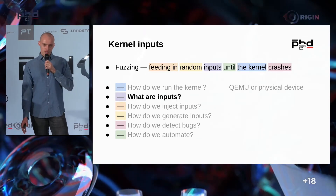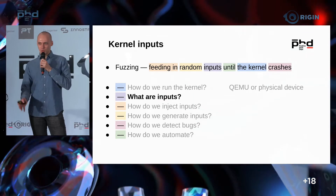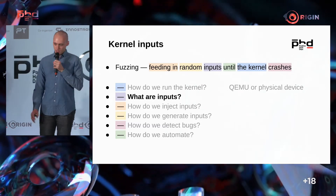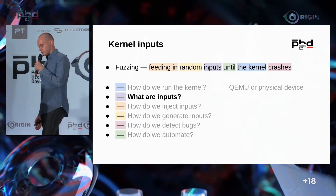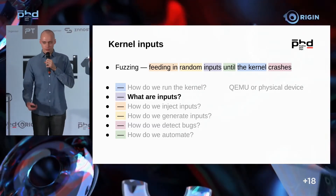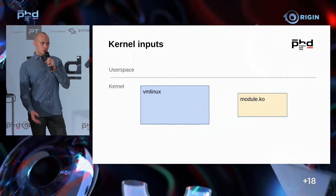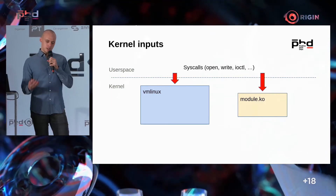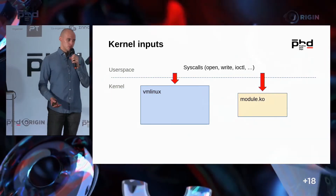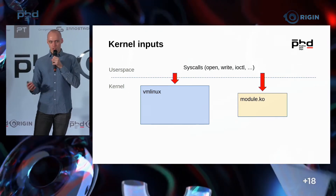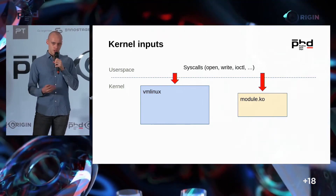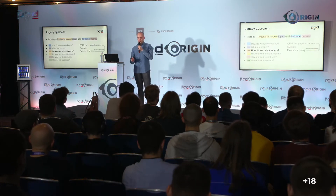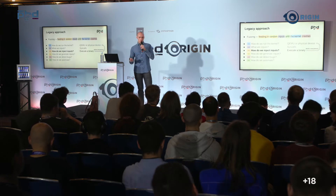So we have two opportunities: physical hardware and VMs. Let's figure out an approach that works in both. The kernel sits between user space and hardware, so whatever we're inputting to the kernel, our inputs are system calls. The answer to the second question is: we're going to fire syscalls.